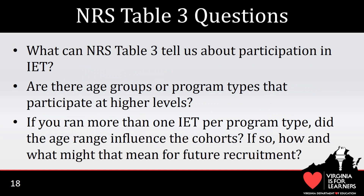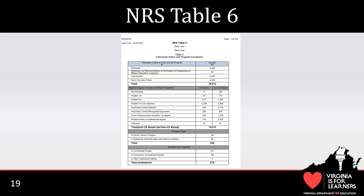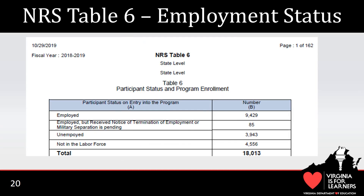Here are some questions about NRS Table 3 for you to consider about your region's participants. This slide contains NRS Table 6 for the state. The table provides three types of information about each region's participants. In the top section of NRS Table 6, the employment status of all participants is provided. The employment status is based on information disclosed by the participant on the ASPD. You will notice that the total number of participants for this section is the same as the total number of participants on NRS Tables 1, 2, and 3.